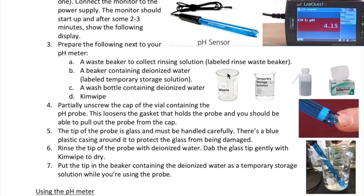Now, get the following four items next to your pH meter. A beaker to collect rinse waste. A beaker filled with deionized water to serve as a temporary storage solution for your pH probe. A wash bottle and then a box of kim wipe.